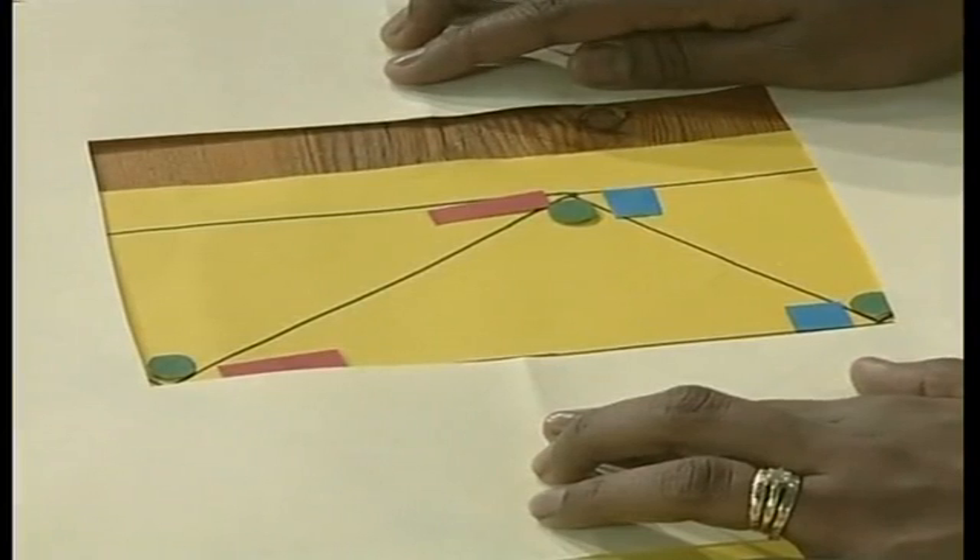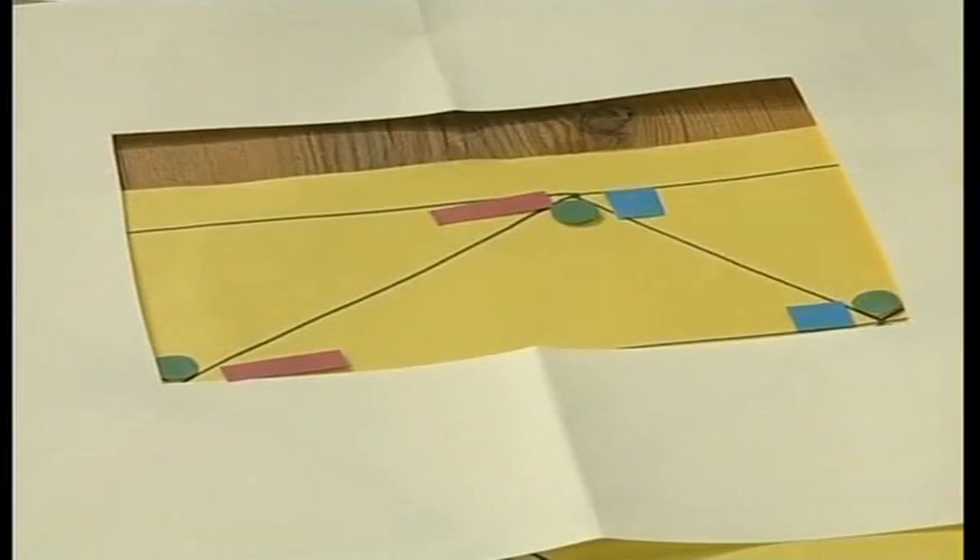So what do you notice about the interior angles of this triangle? That they all equal up to 180 degrees. So you are saying that the sum of these angles adds up to 180 degrees. Yes. So the square plus the circle plus the rectangle is equal to 180 degrees.